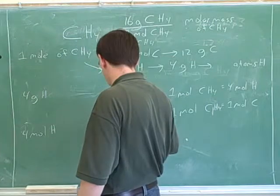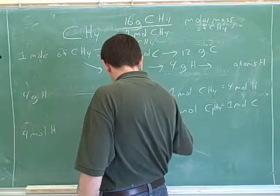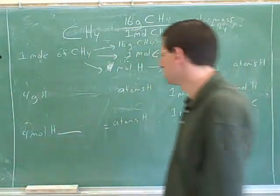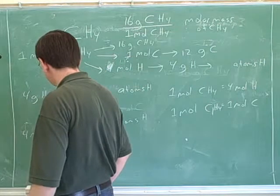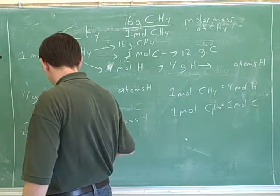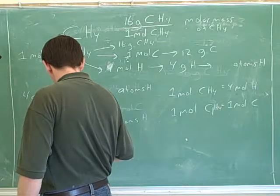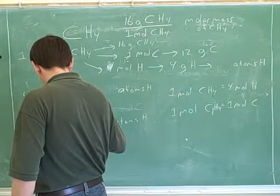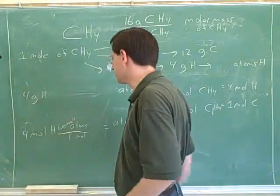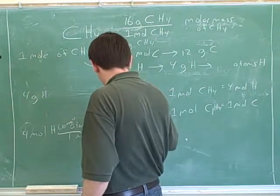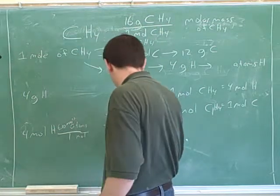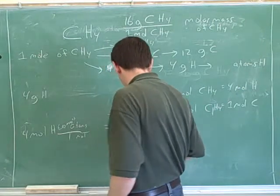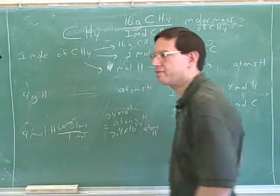Now, what are our target units? Let's try doing this conversion. We have more atoms per mole, so that would be 6.02 times 10 to the 23rd. That would tell us the total number of atoms, which would be about 24 times 10 to the 23rd atoms, or 2.4 times 10 to the 24th atoms of hydrogen.